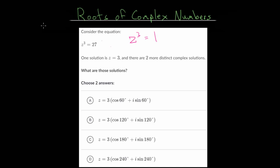We're told that one of the roots is z equals 3. And we can see this is true, since if we take 3 and raise it to the third power, or multiply it by itself three times, we do get 27. But there are two other roots. In fact, whatever power our complex number z is raised to, that's how many distinct roots we will have in total.